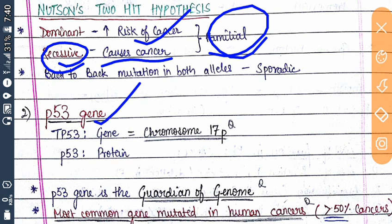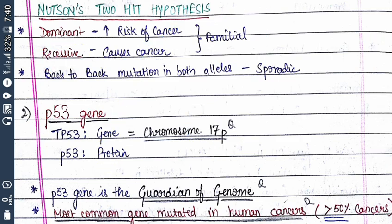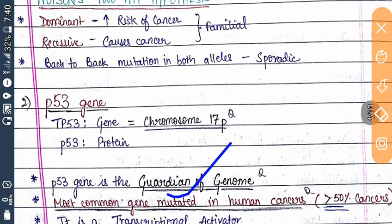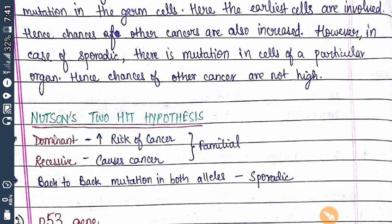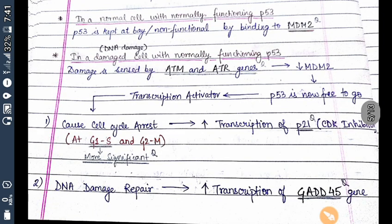After the retinoblastoma protein, the next gene is the p53 gene. The p53 gene forms the TP53 protein and is present on chromosome 17. This gene is known as the 'guardian of the genome.' The most commonly mutated gene in human cancers is the p53 gene, and this protein functions as a transcriptional factor.